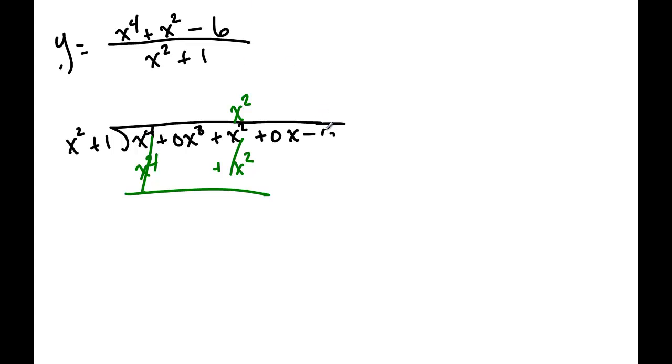So let's redraw that. x to the fourth plus x squared, sorry about that. These cancel and we're just left with, there was a 6 over here. Bring down the 6 and so we have a remainder here.